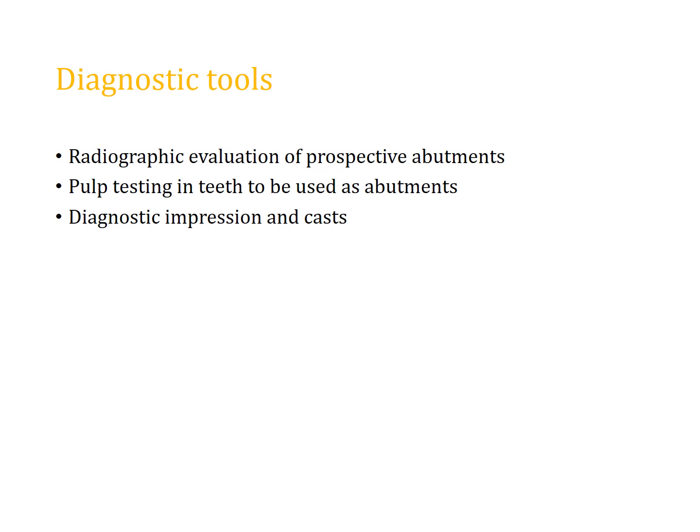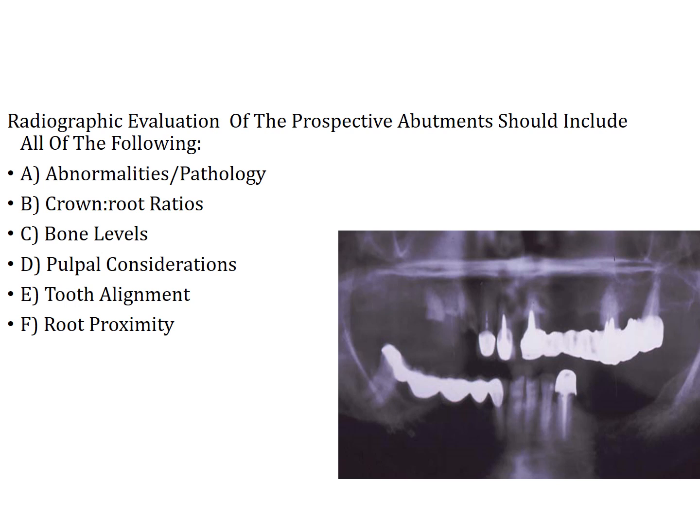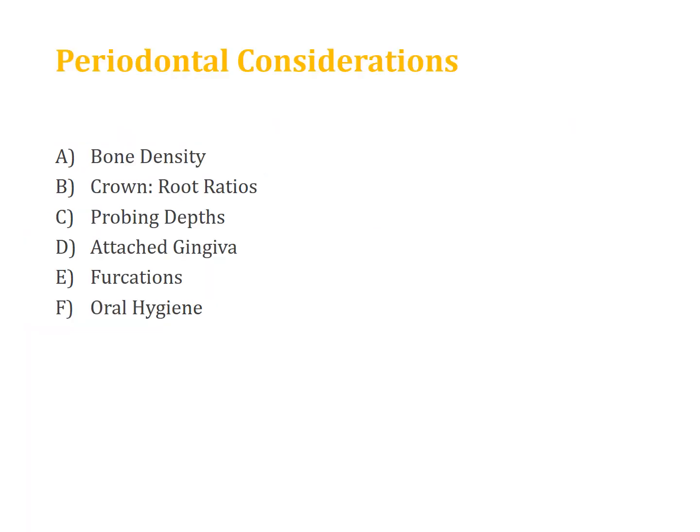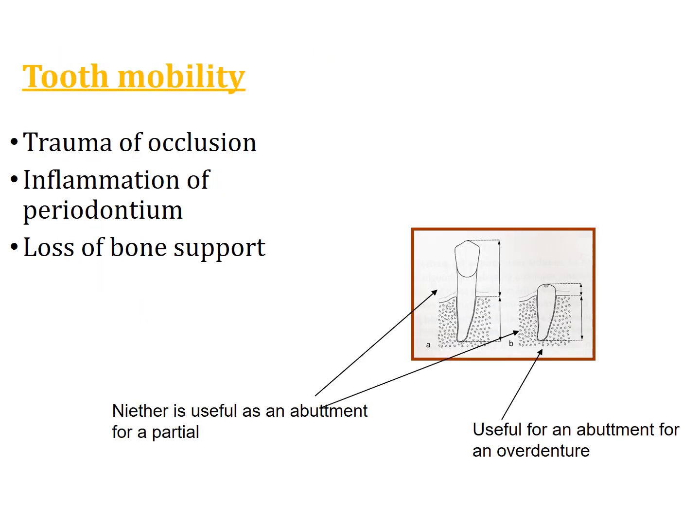Various diagnostic tools are available: radiographs, pulp testing of questionable abutment teeth to check their vitality, and mounted casts on an articulator to evaluate interarch space, interarch relationship, crown height, abutment tooth height, and undercuts. Periodontal considerations include assessing crown-to-root ratio, bone density, probing depths, furcation involvement, and any endoperiapical lesions.